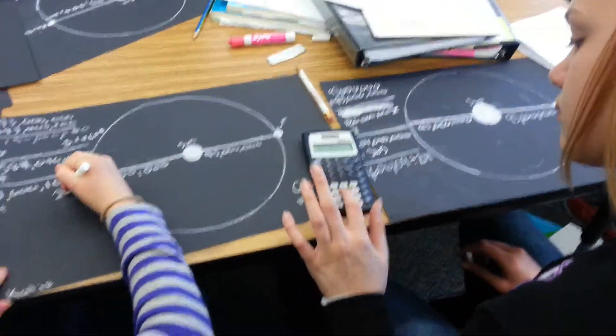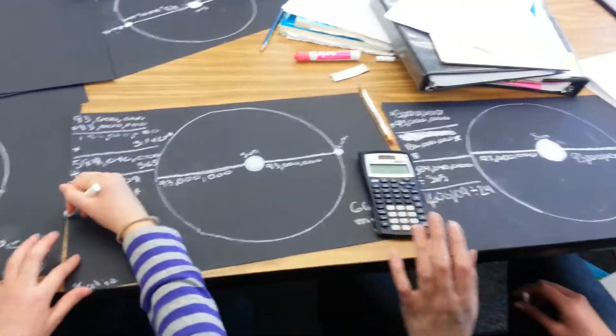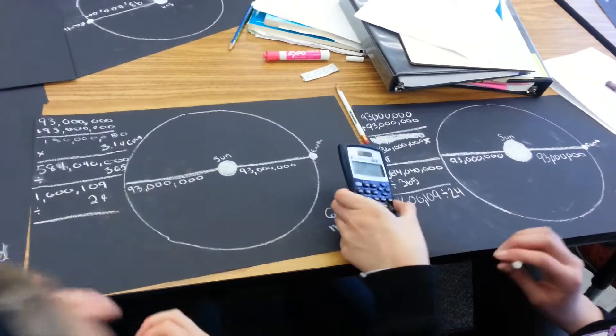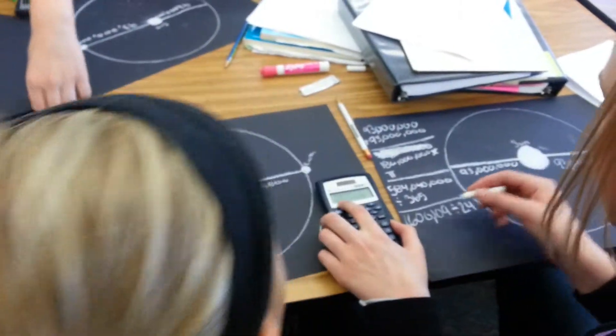Oh, the distance from the Earth to the Moon? Hold on, I knew that. It's like 240,000 miles right here.